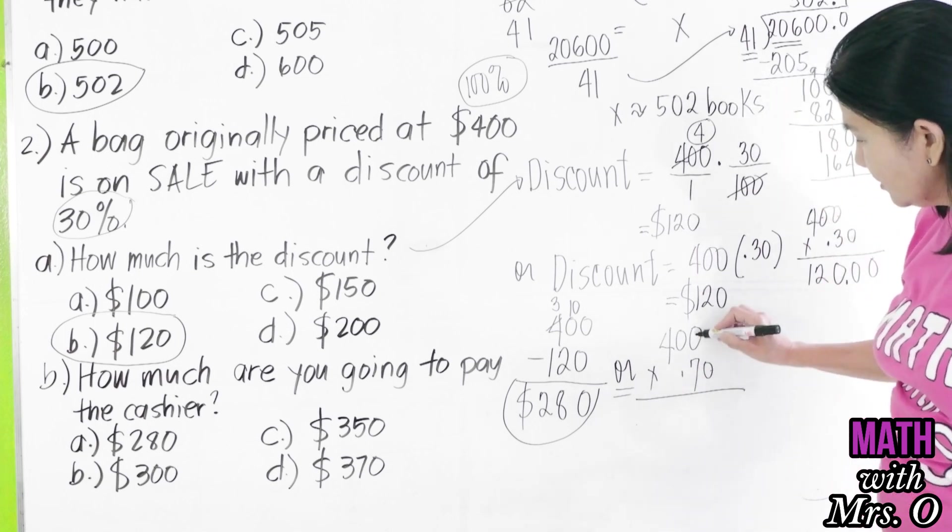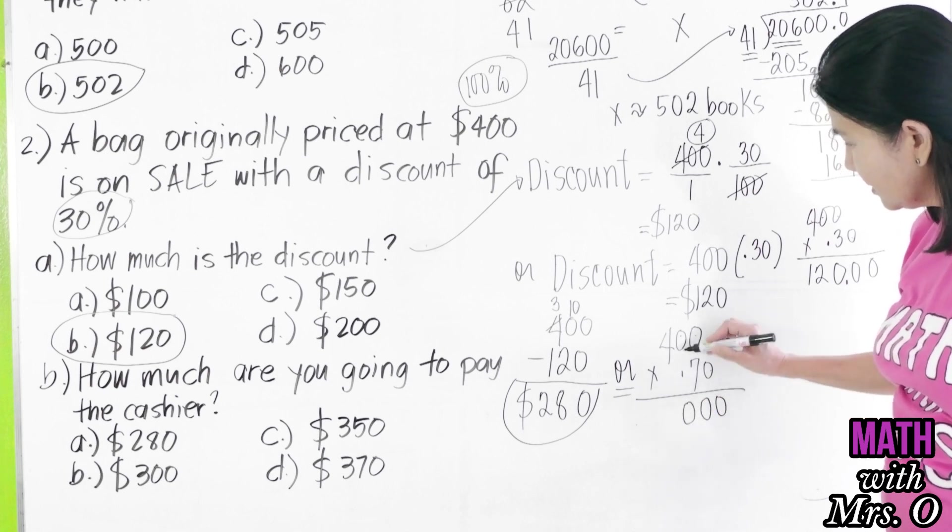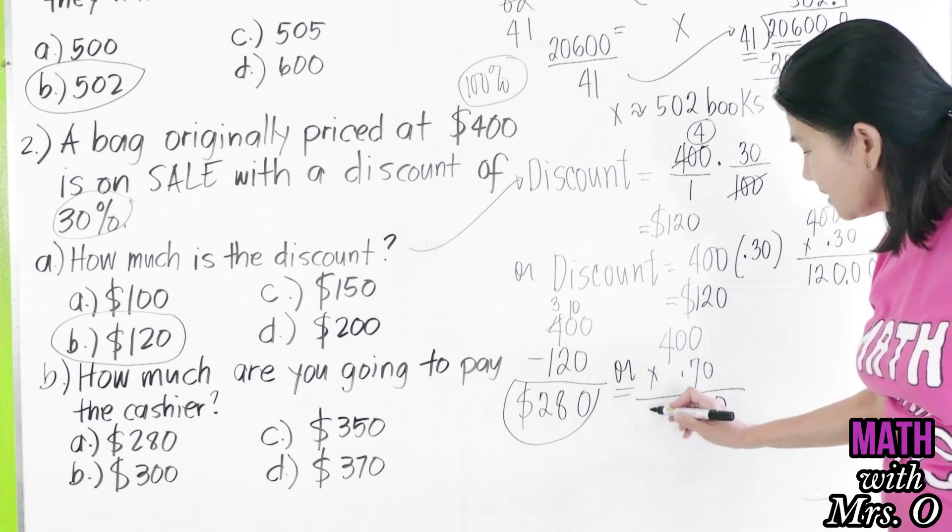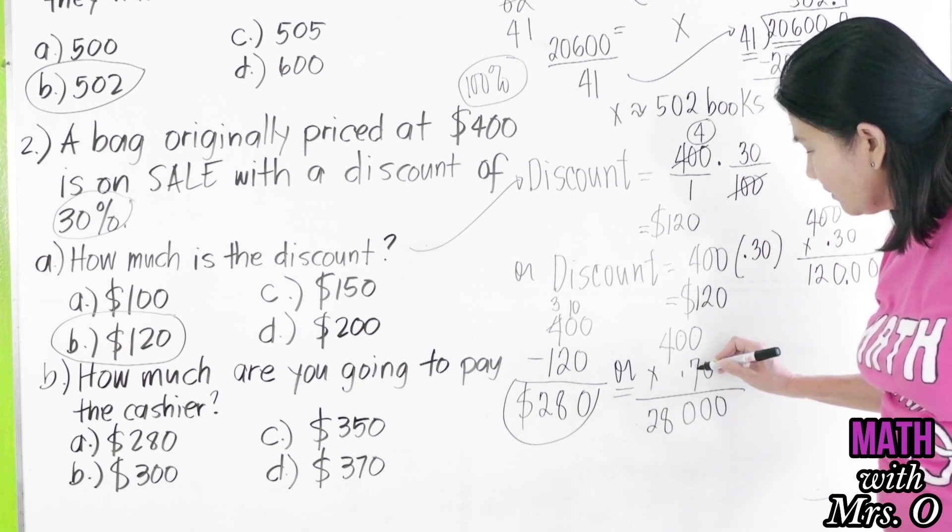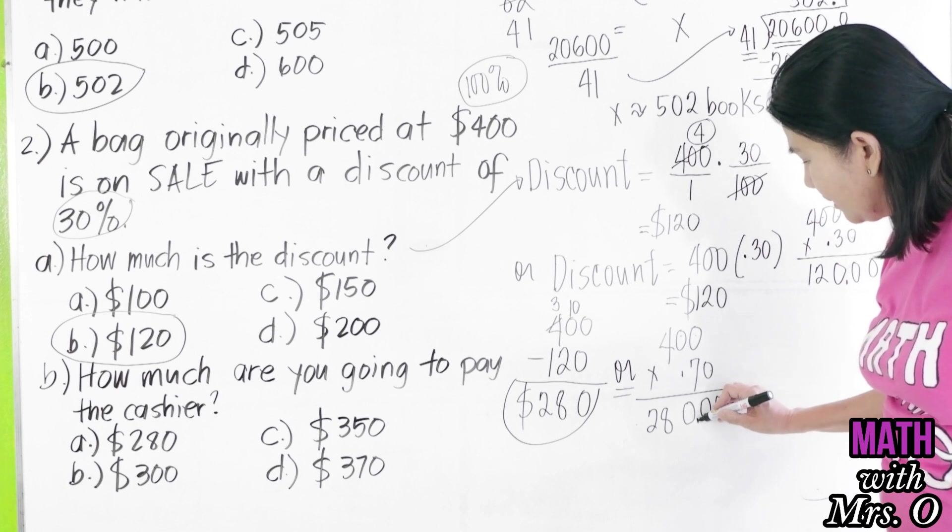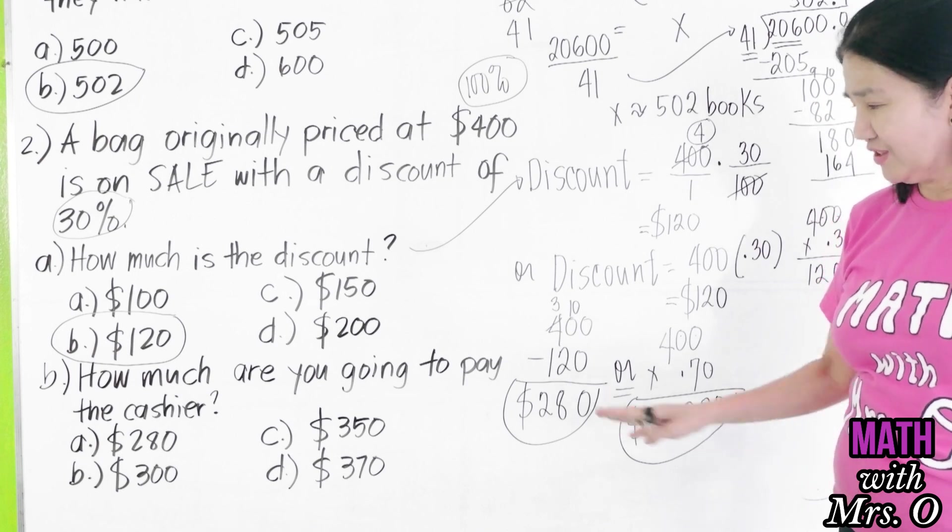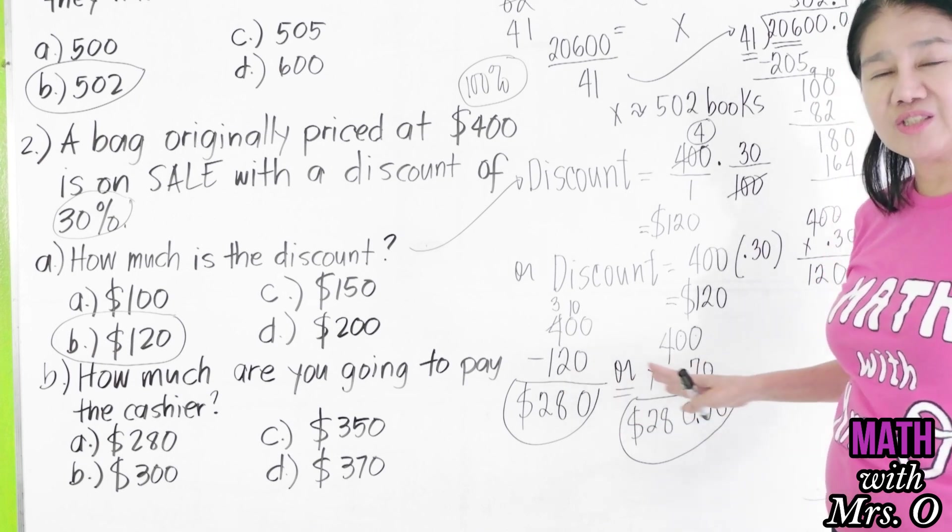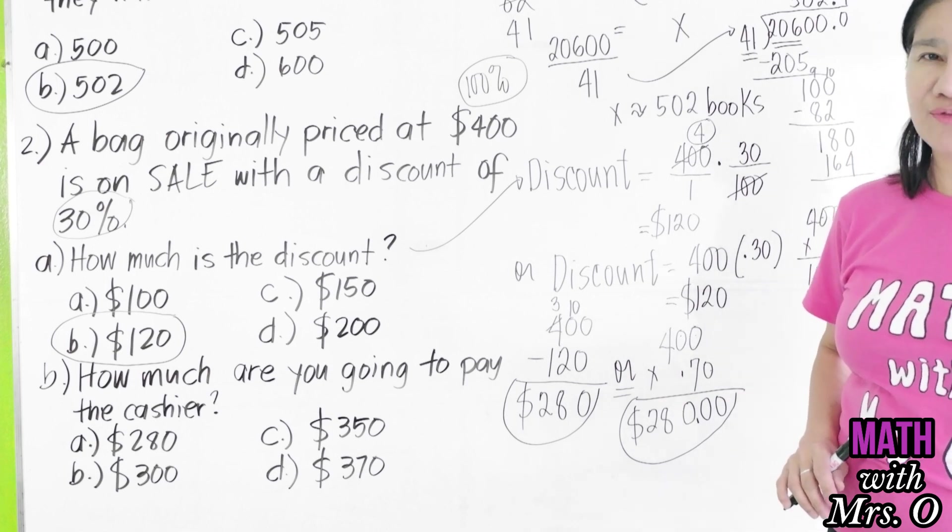This will give you 1, 2, 3, 1, 2, 3, 0s. So, 7 times 4 is 28. And there are 2 decimal places, 1, 2 point, 1, 2 point. You still get $280. So, it's up to you to choose which solution you think is best for you or is easier for you.